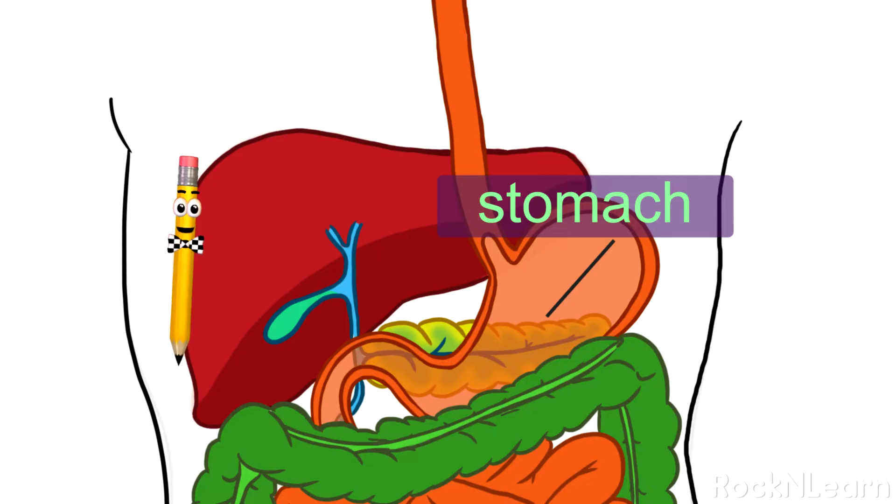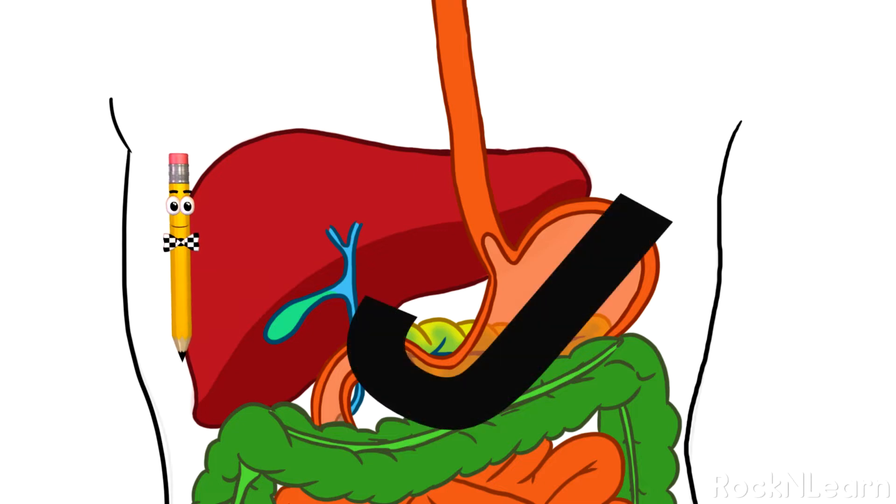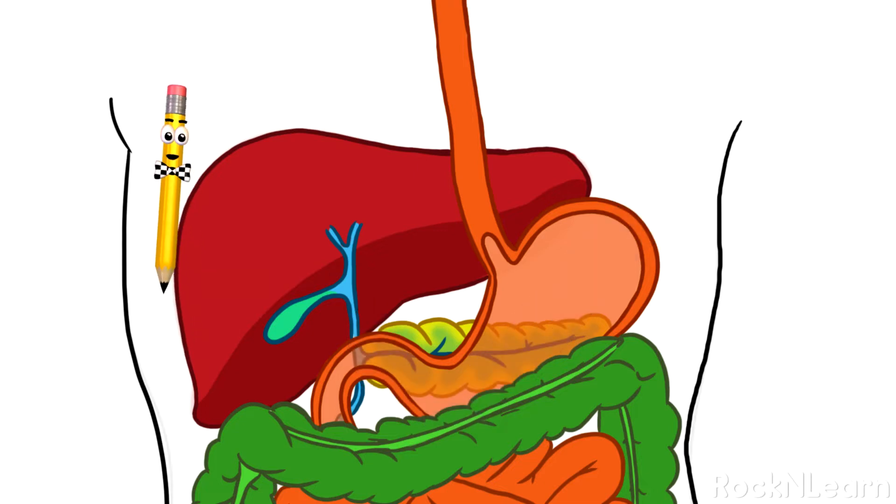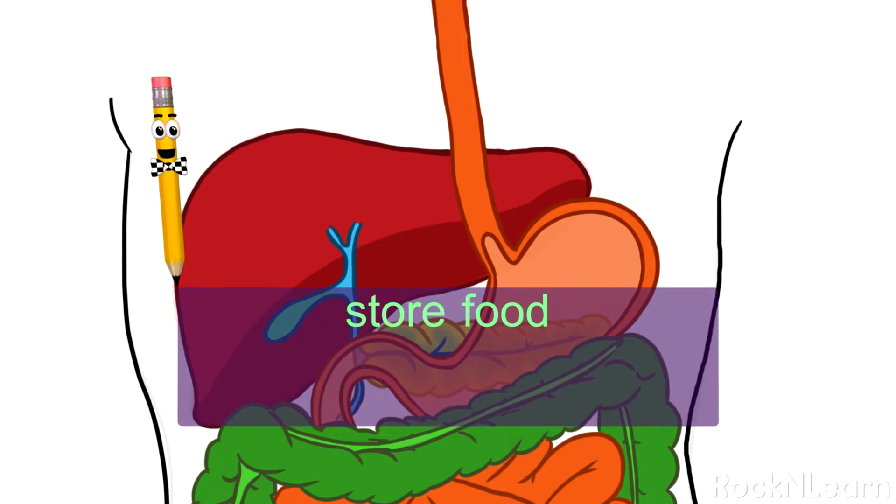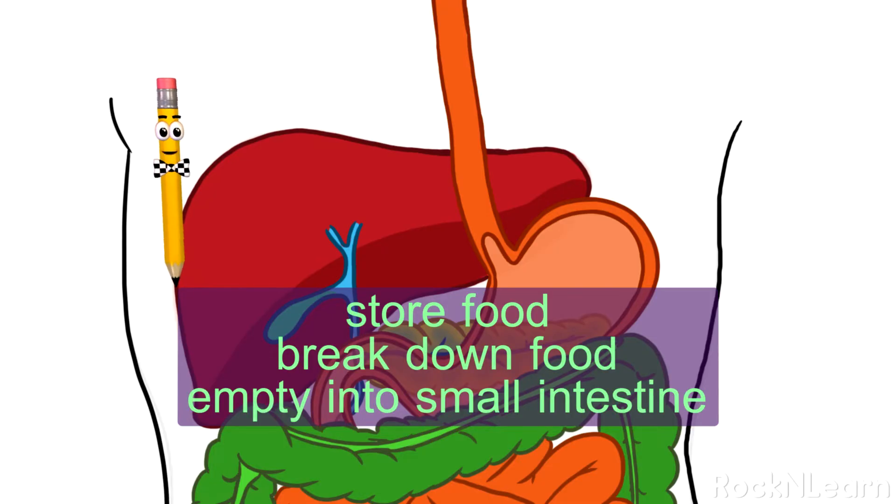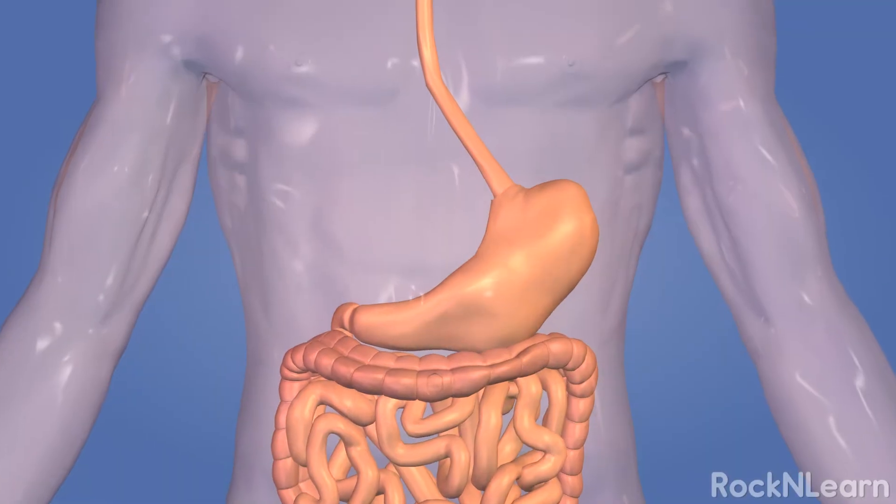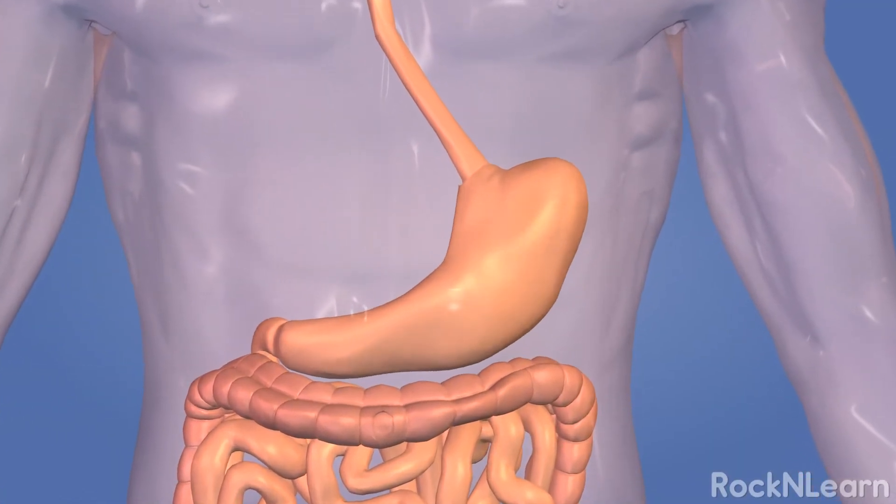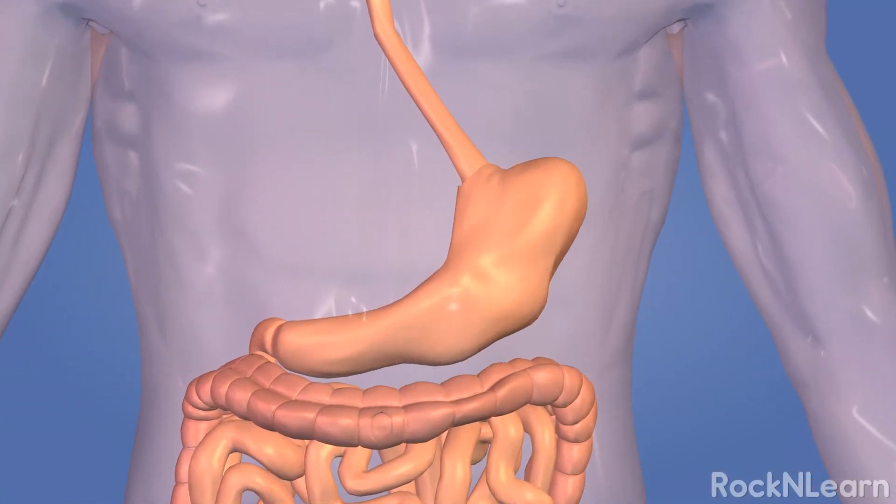Your stomach is attached to the end of the esophagus. It's a stretchy sack shaped sort of like the letter J. It has 3 important jobs: to store the food you've eaten, to break down the food into a pulpy liquid mixture, and to slowly empty that liquid mixture into the small intestine. The stomach is like a mixer, churning and mashing together all the small balls of food that come down the esophagus into smaller and smaller pieces.